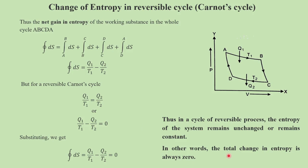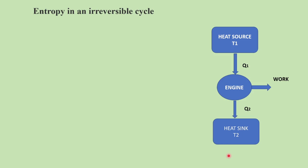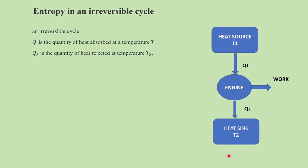Now let us find the entropy change during an irreversible process. Consider an irreversible cycle in which Q1 is the amount of heat absorbed at temperature T1 and Q2 is the amount of heat rejected at temperature T2. The efficiency of this cycle is given by (Q1 minus Q2) upon Q1. According to Carnot's theorem, the efficiency of an irreversible cycle is always less than the efficiency of a reversible engine.